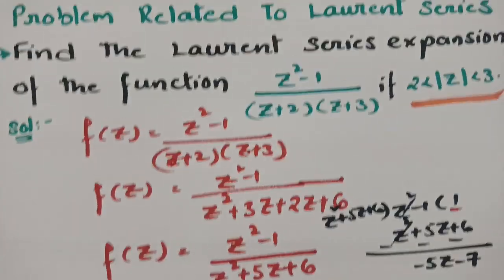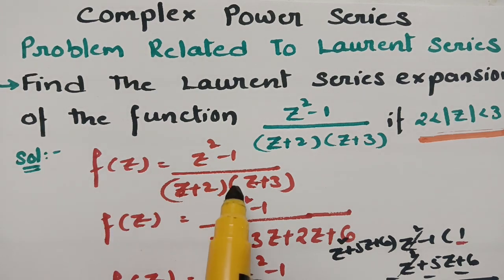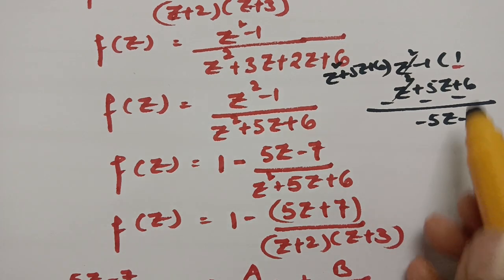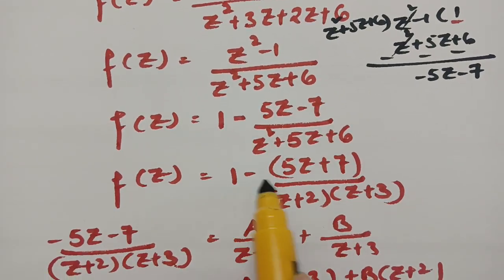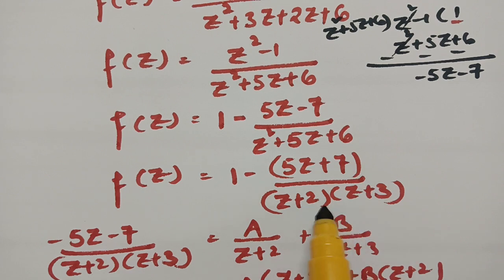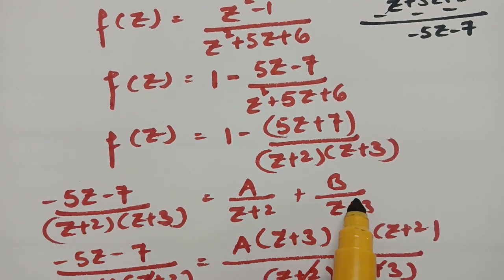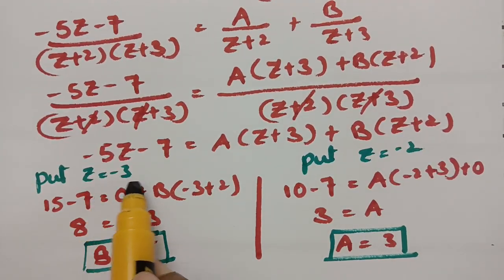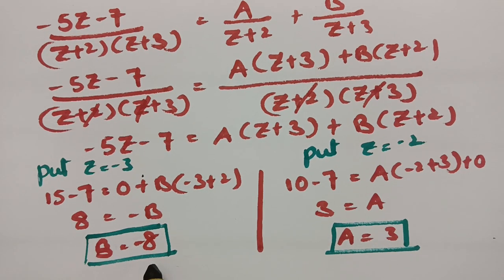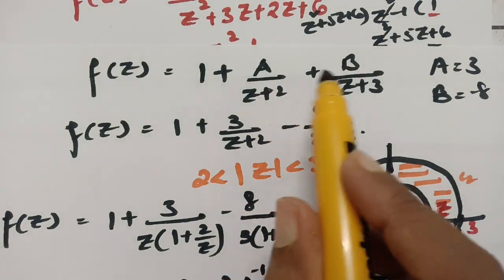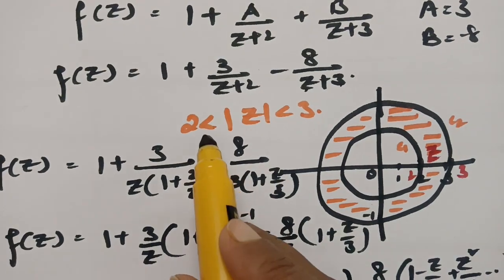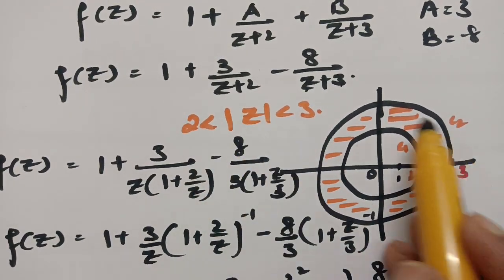To summarize: the function has equal degree in numerator and denominator, so we must divide before resolving into partial fractions. After division we get 1 minus (5z + 7) / [(z + 2)(z + 3)]. Resolving into partial fractions and substituting A = 3 and B = -8 gives us the function in the required form.